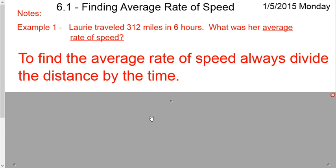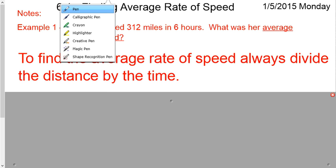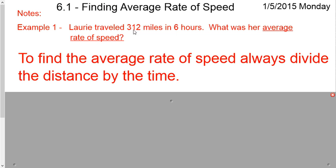The rule of thumb is always divide your distance by the time. It doesn't matter what order it shows up in the problem. For instance, the distance was 312 miles and the time was 6 hours. We could have flipped it around. We said it took Lori 6 hours to travel 312 miles.